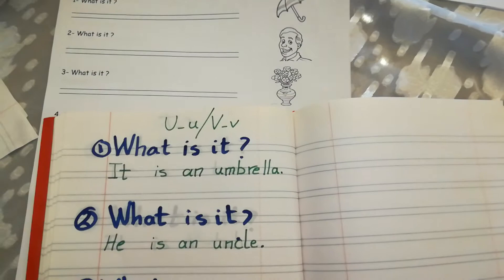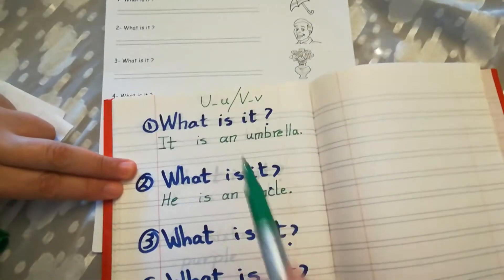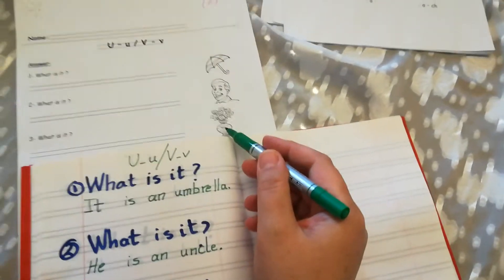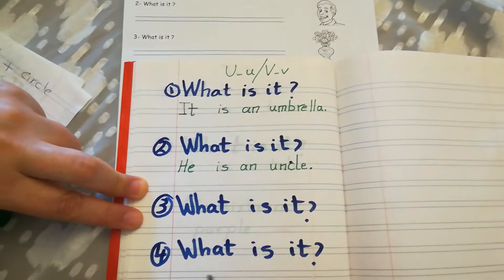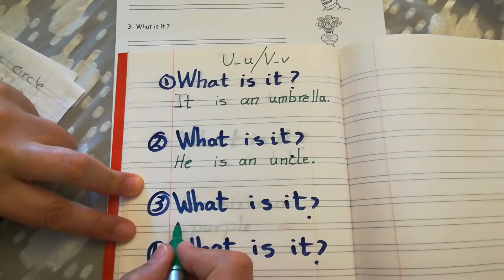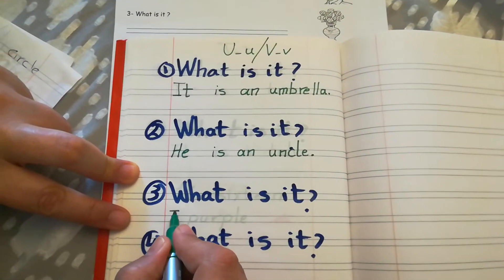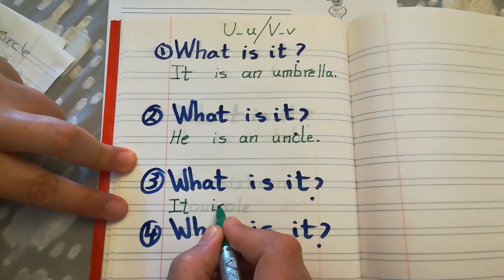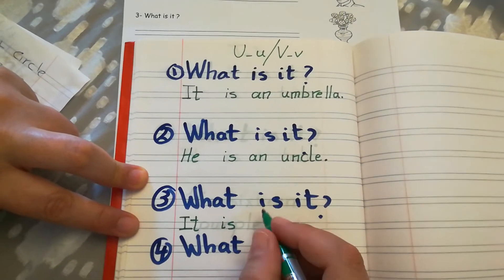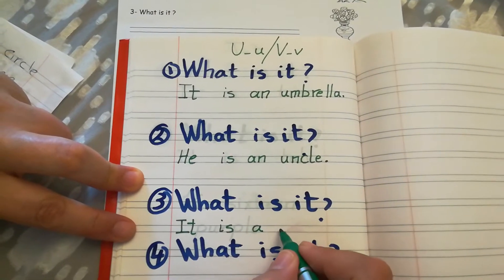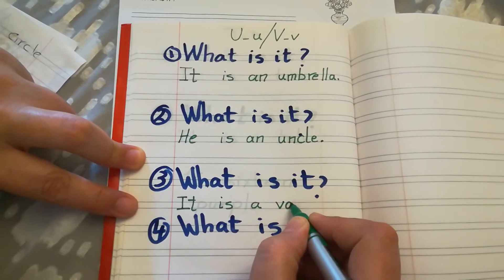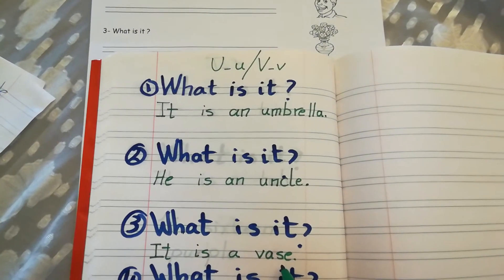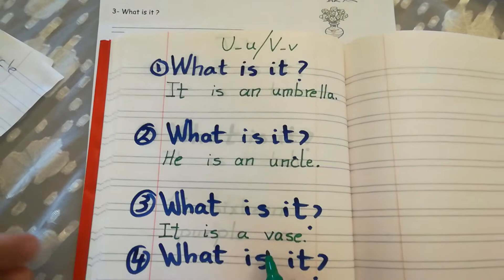Next, what is this letter? V. Sound of letter V. What is it? Vase. It is a vase. Let's write: capital letter I, small letter T — 'it.' Small letter I, small letter S — 'is.' Small letter A. Vase: V, A, S, E. It is a vase.